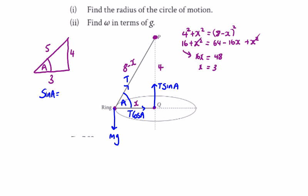Sine A is four over five, cos A is three over five. So T sine A is 4T over 5, and T cos A is 3T over 5.